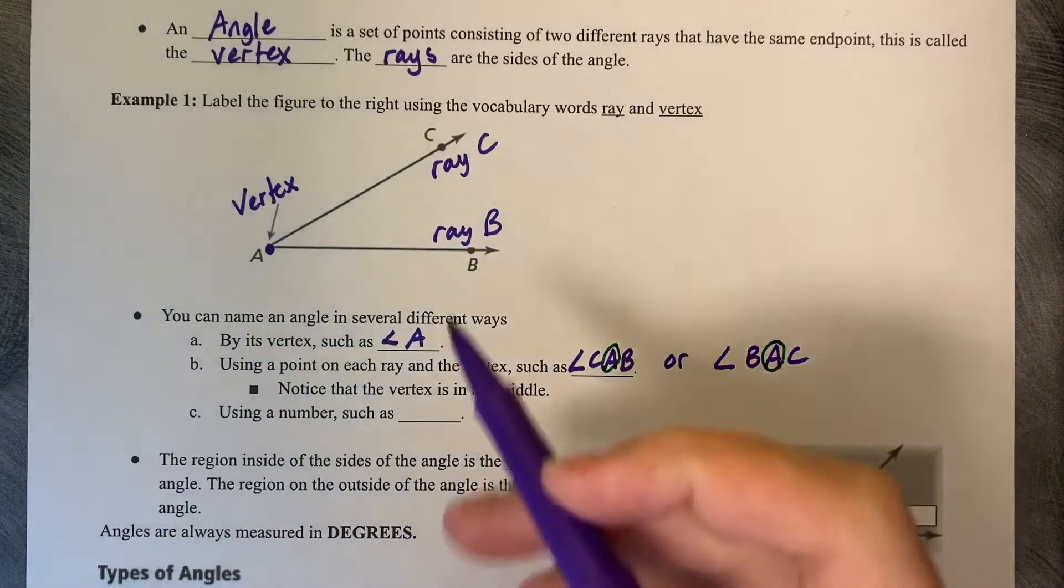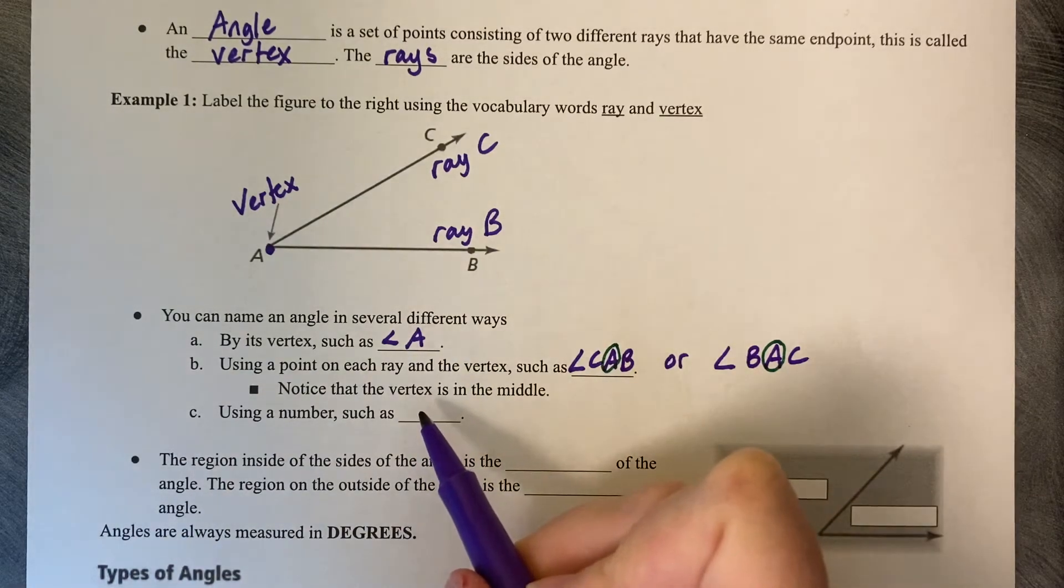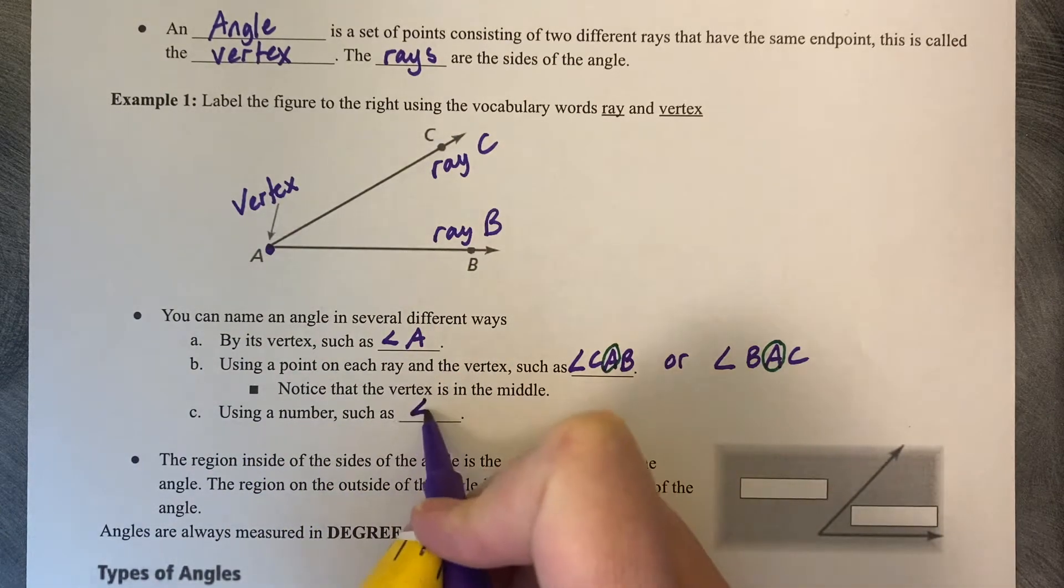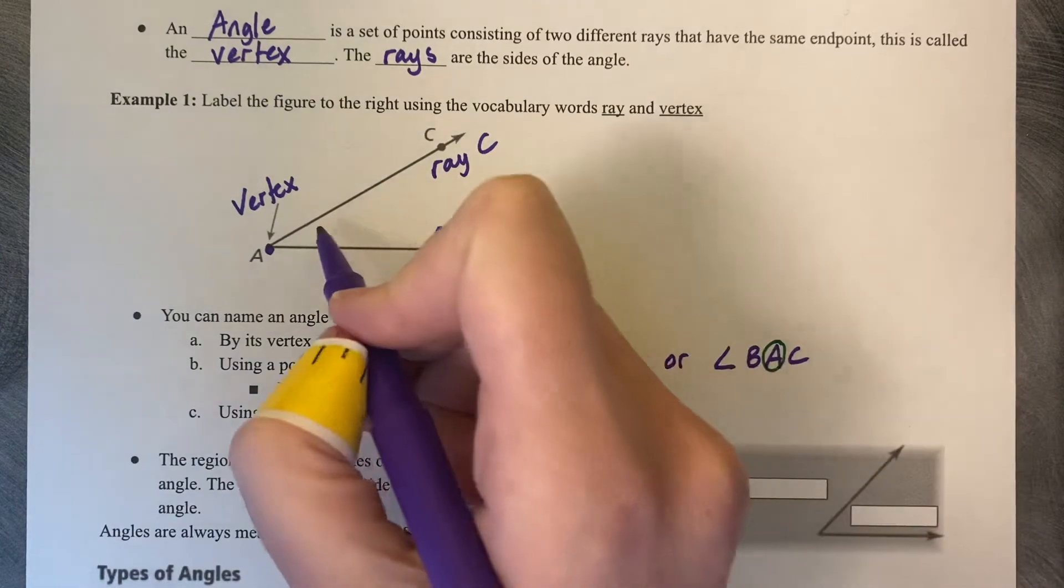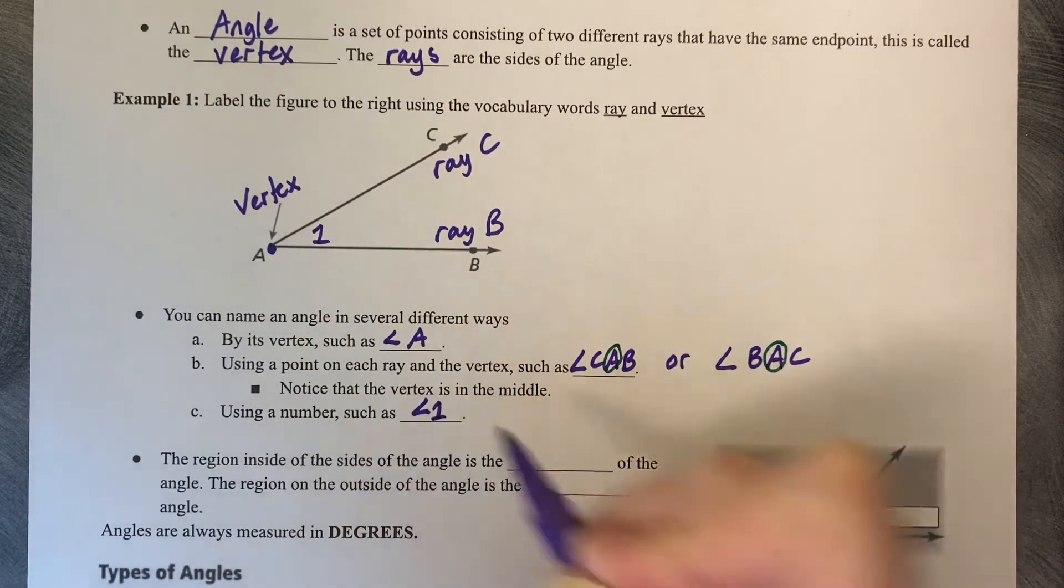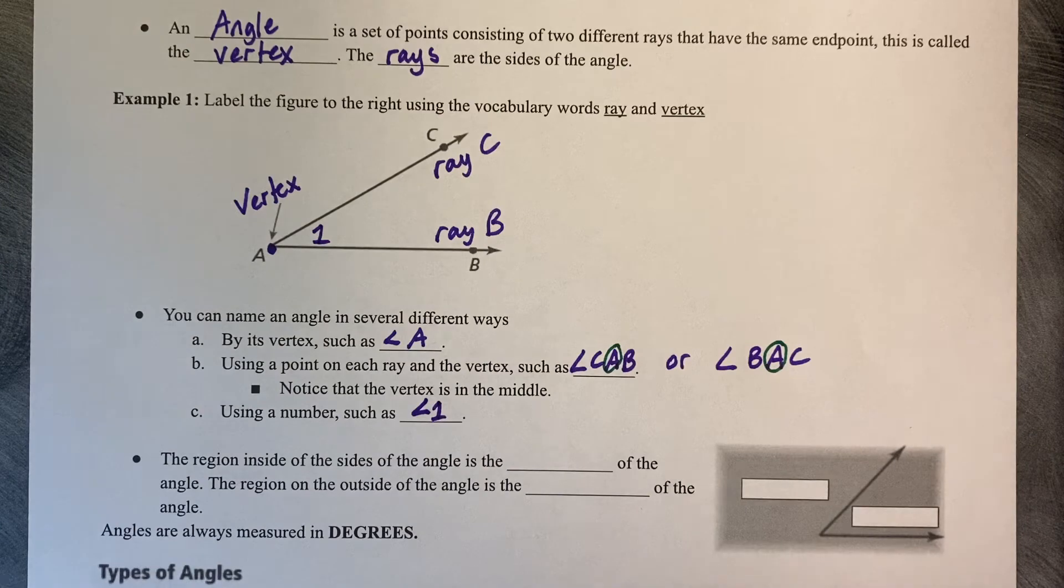The last one that comes up fairly often is that you can label an angle using a number, such as angle one. And then we would put a little one on the inside of the angle. A little one on the inside of the angle to match it.